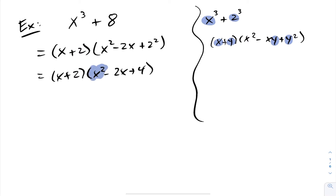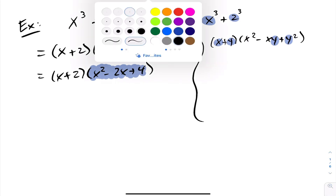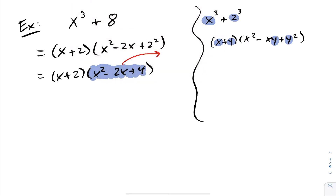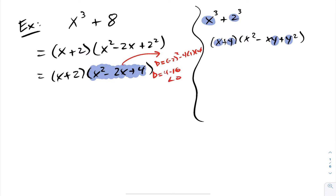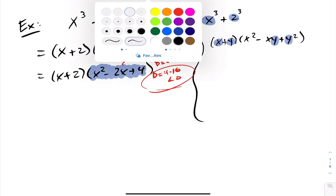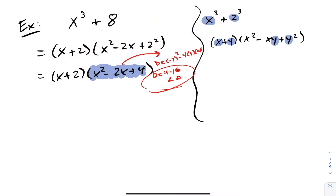Notice you can't factor this any further. A quick check of the discriminant gives b squared minus 4ac, which is 4 minus 16, which is less than 0. So this has no further real roots — they're complex roots, and we're done. That's the fully factored form of x cubed plus 8.